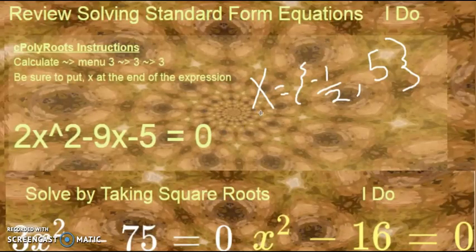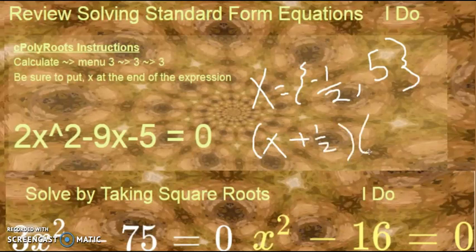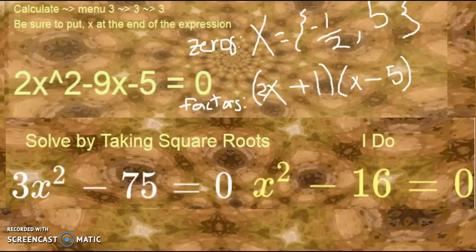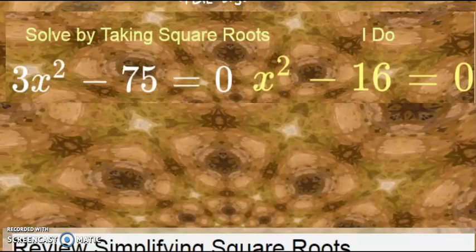We write that on our paper: x equals negative 1 half and 5. The factors would be x plus 1 half and x minus 5. But remember, we need to slide that denominator to the front to make it 2x plus 1 times x minus 5. That's your factors.